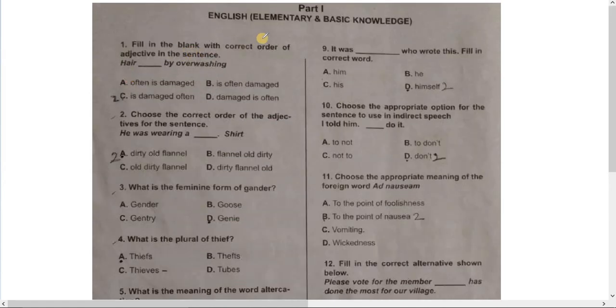Question number 1. Fill in the blank with correct order of adjectives in the sentence. Here dash by overaging. Number A: often is damaged. Number B: is often damaged.